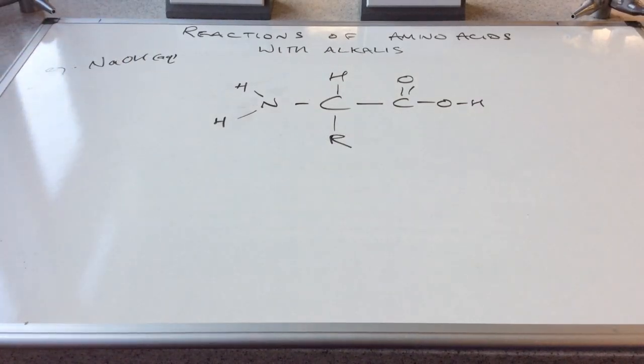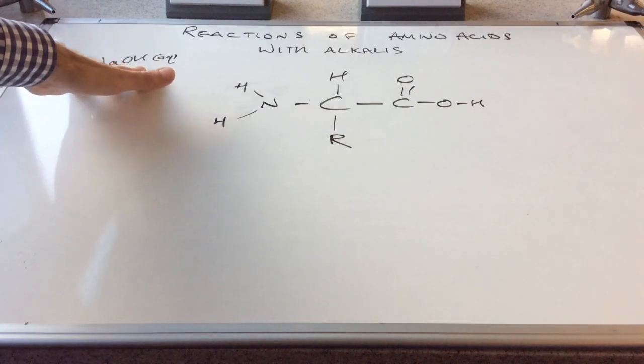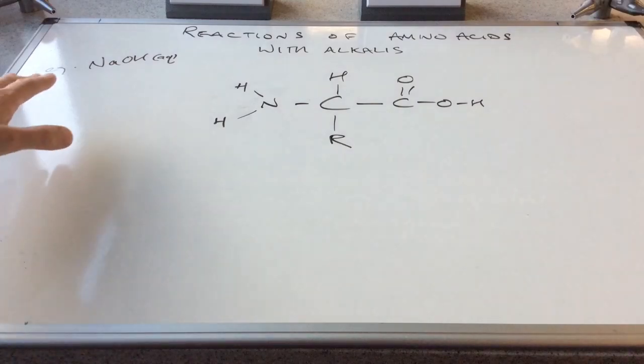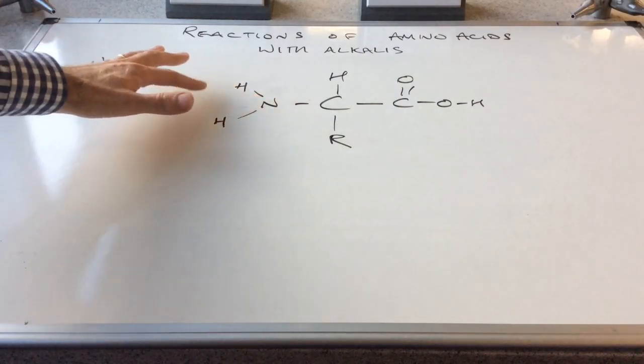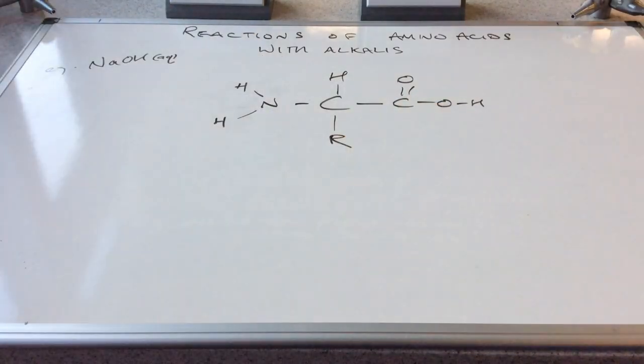So we'll move on now to the reaction of amino acids with alkalis. So I've just got the general formula there back. And I'm specifying the alkali as sodium hydroxide. So which part of the molecule can react with an alkali? Well, it's not going to be this part because this is a base. It's this part here, the carboxylic acid part.